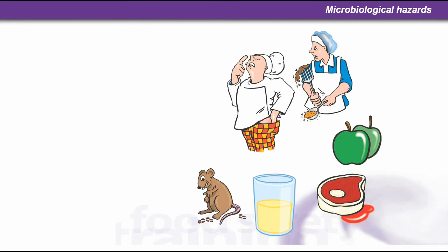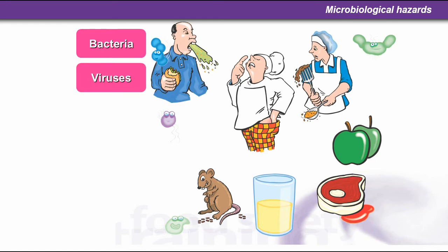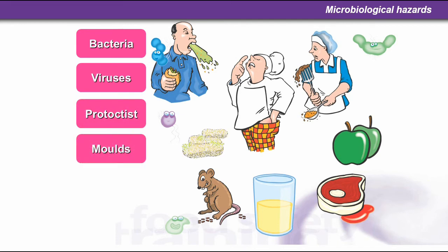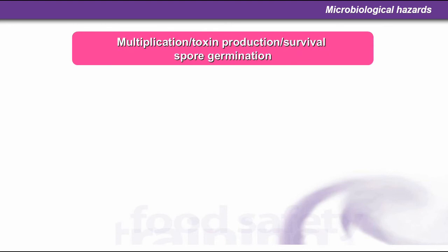Looking at microbiological hazards, we have bacteria — single-celled organisms — and viruses, which are much smaller than bacteria but can still cause many problems, and are not classed by many food safety experts as living molecules. We also have protists, moulds, parasites, and algae. The hazards themselves include multiplication of bacteria, toxin production from some bacteria, survival of bacteria where there has been no processing such as lack of cooking to the correct temperature, and spore germination of certain bacteria — in particular Clostridium and Bacillus.